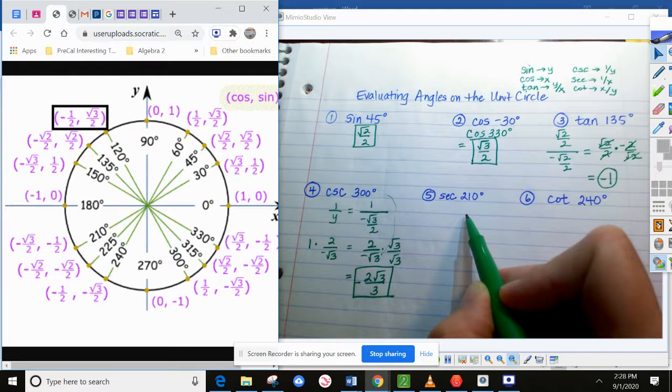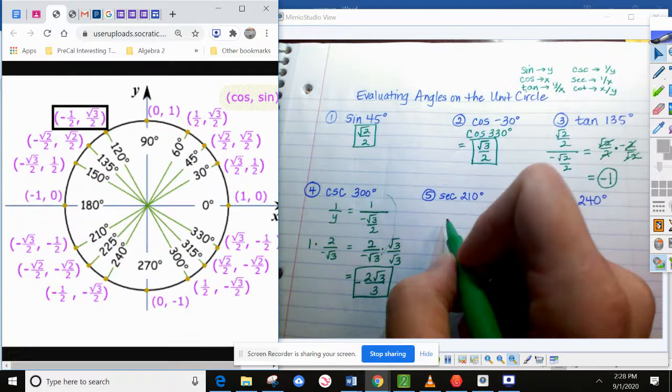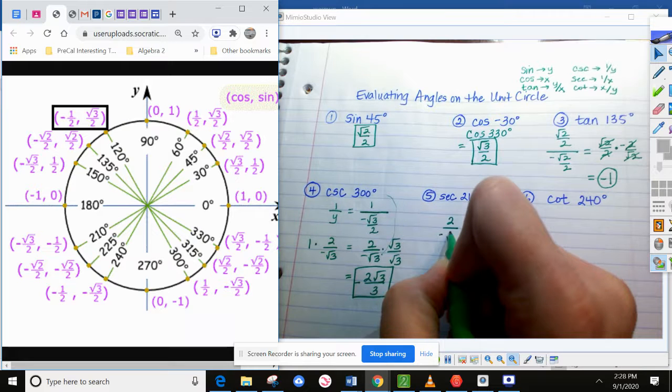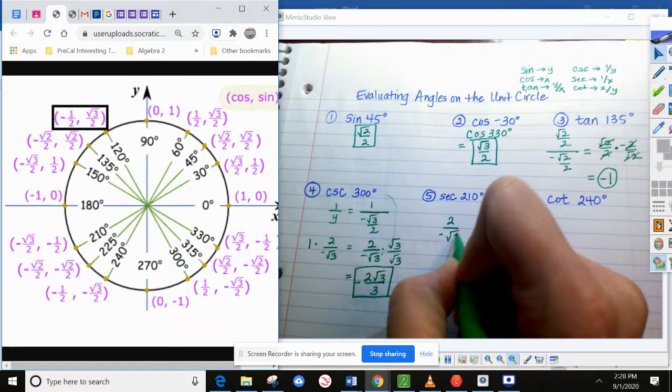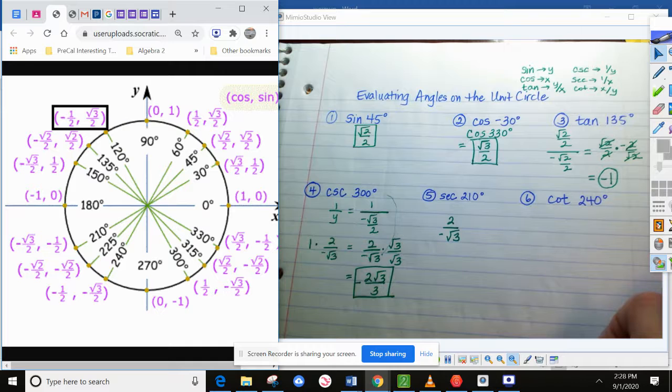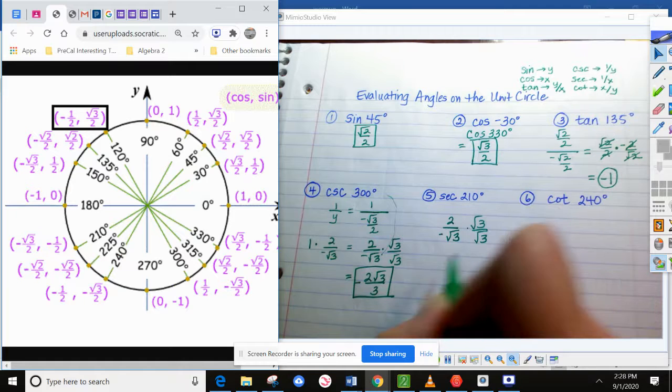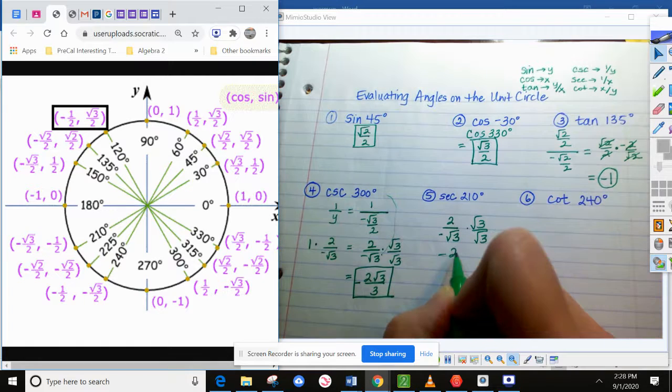So it's again going to be that 2 over the square root of 3. And it again is a negative because we're on 210 now and the x coordinate is negative over in that quadrant. So if you rationalize this again, it will be the same answer actually as the one before.